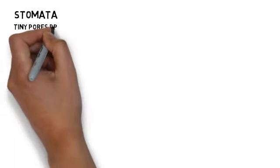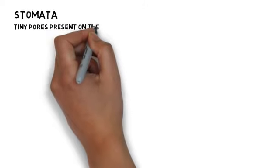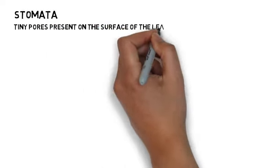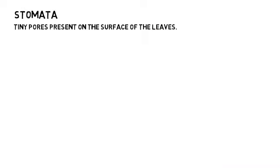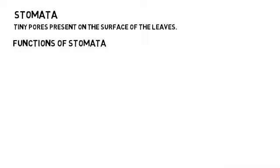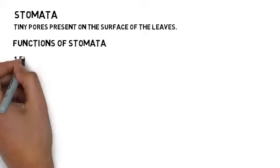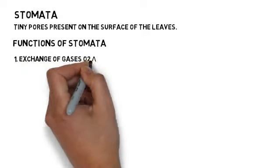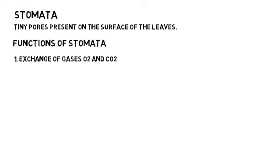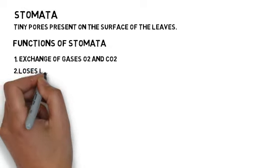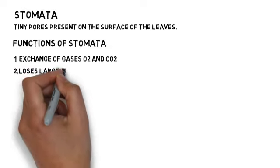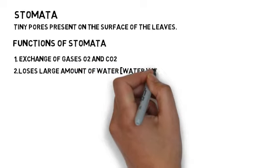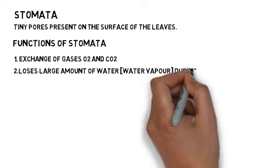Stomata are tiny pores present on the surface of the leaf, mainly on the lower epidermis. Their functions are: first, they allow exchange of gases — oxygen and carbon dioxide; and second, they are involved in the process of transpiration, which is the loss of water vapor from the plant.